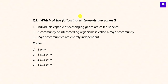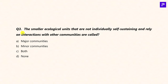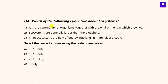Question 2: Which of the following statements are correct? Statement: Individuals capable of exchanging genes are called species — True. Statement: A community of interbreeding organisms is called a major community — False; a community of interbreeding organisms is called a population. Statement: Major communities are entirely independent — False; they are relatively independent, not entirely independent. So the answer is statement 1 only. Question 3: The smaller ecological units that are not individually self-sustaining and rely on interactions with other communities are minor communities — answer is B.